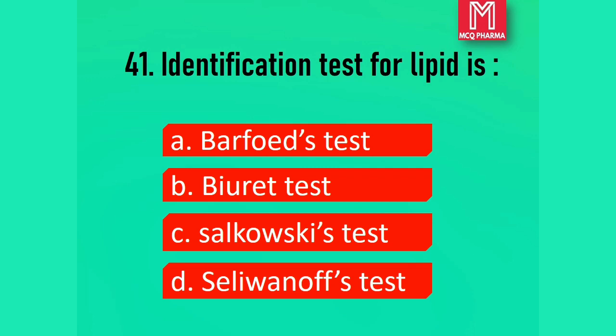Question number 41. Identification test for lipid is: Option A, Buffered test. Option B, Biuret test. Option C, Salkowski test. Option D, Serivanox test. Correct answer: Option C, Salkowski test.